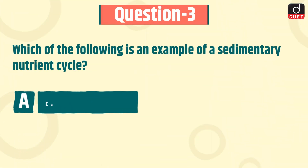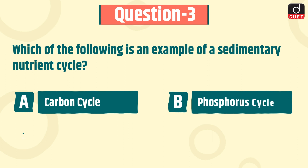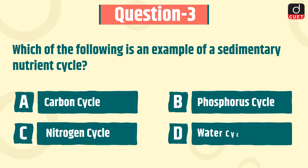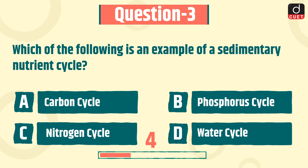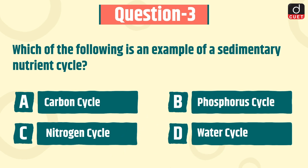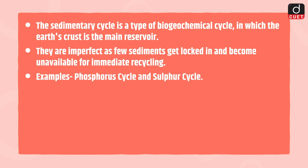The next question is: which of the following is an example of a sedimentary nutrient cycle? Carbon cycle, phosphorus cycle, nitrogen cycle, or water cycle? The correct answer is option B, phosphorus cycle. The sedimentary cycle is a type of biogeochemical cycle in which the earth's crust is the main reservoir. They are imperfect as few sediments get locked in and become unavailable for immediate recycling. Examples include the phosphorus cycle and the sulfur cycle.